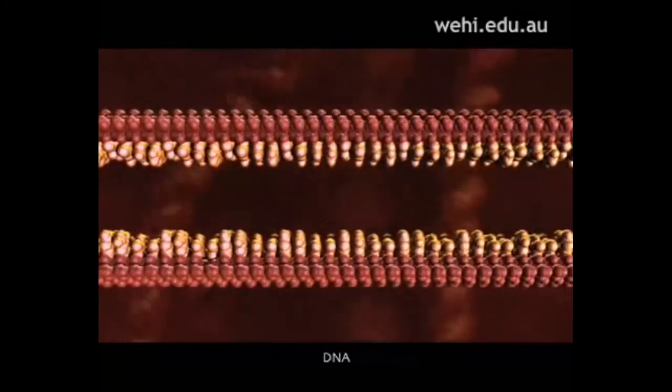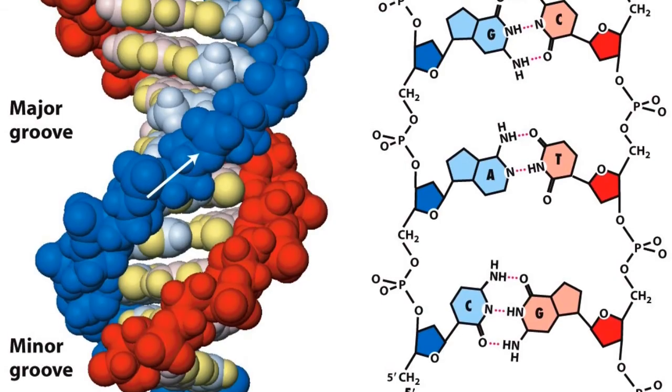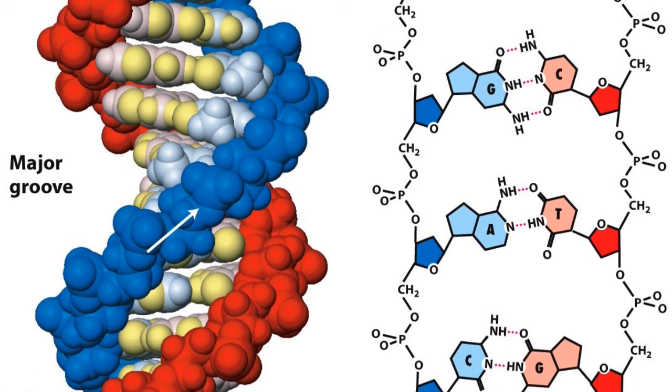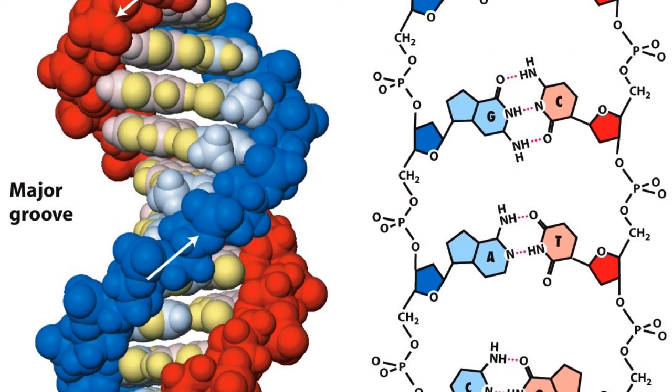The zipper-like teeth are nucleotides. The RNA strand of the picoRNA virus has 8,000 teeth, or nucleotides. That's pretty long.